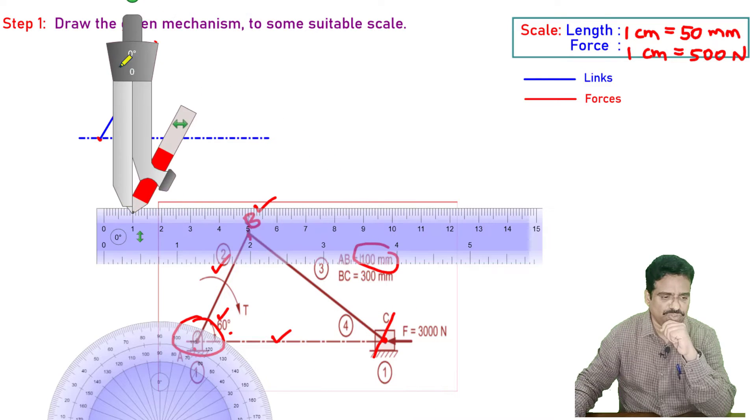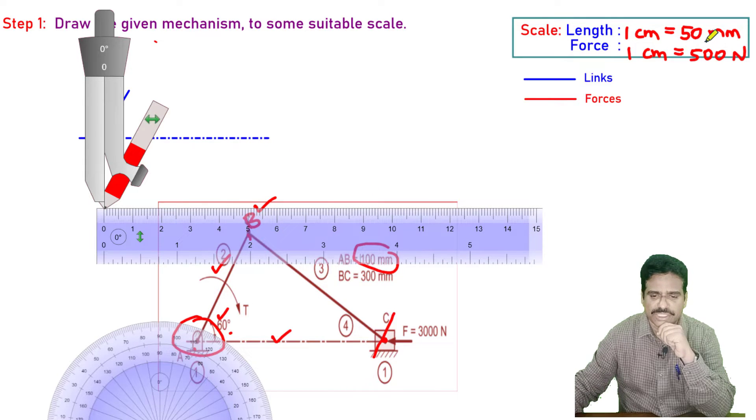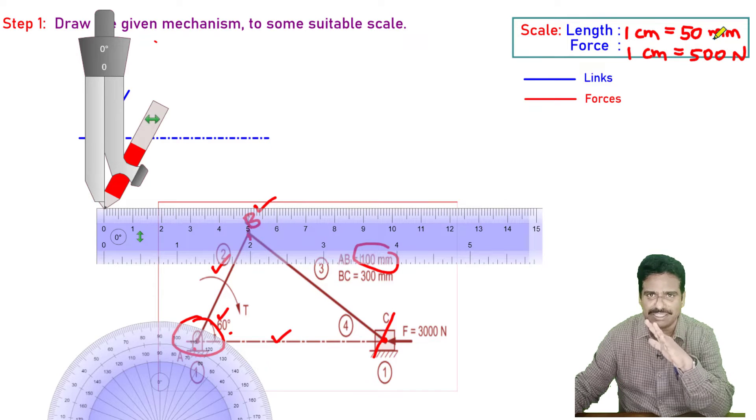Now I need to go for length of the connecting rod. It is 300 mm. Therefore, the scale is 50 mm, so I need to draw 6 centimeter length. Is that clear?